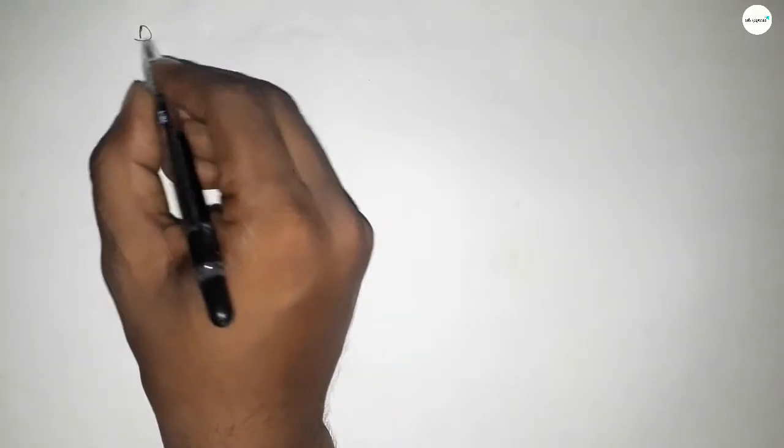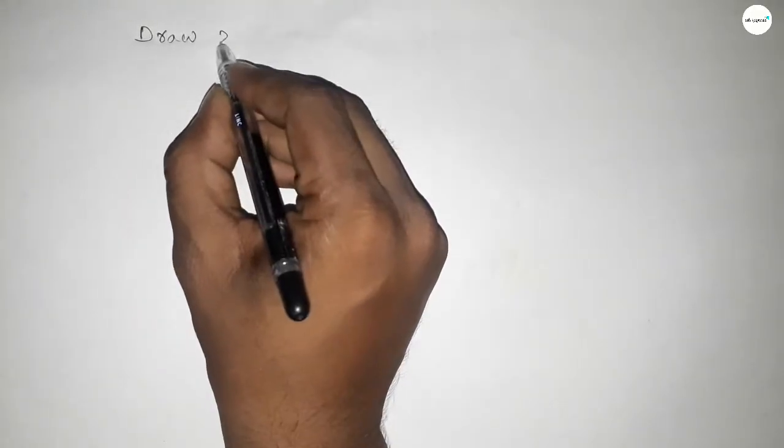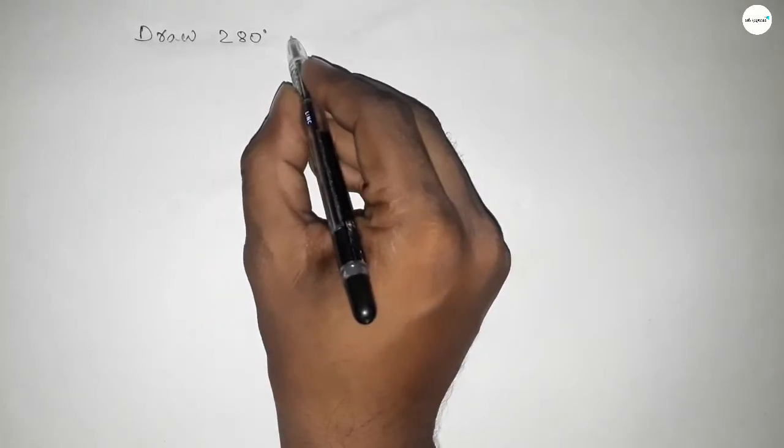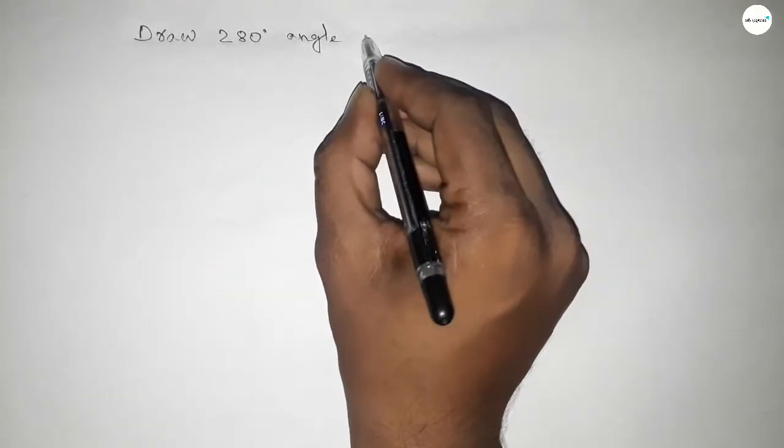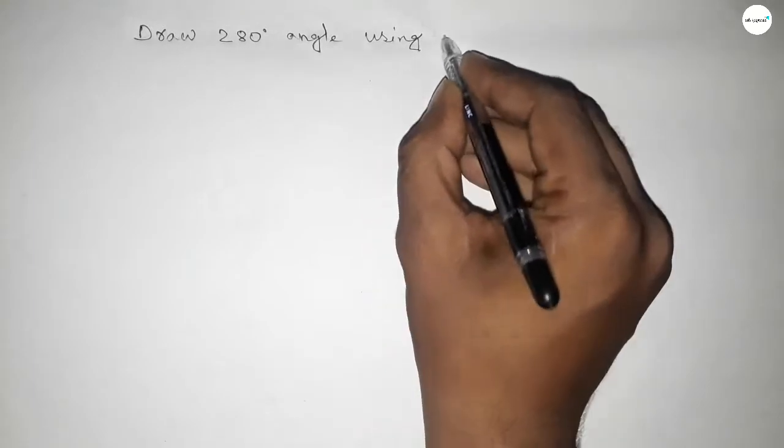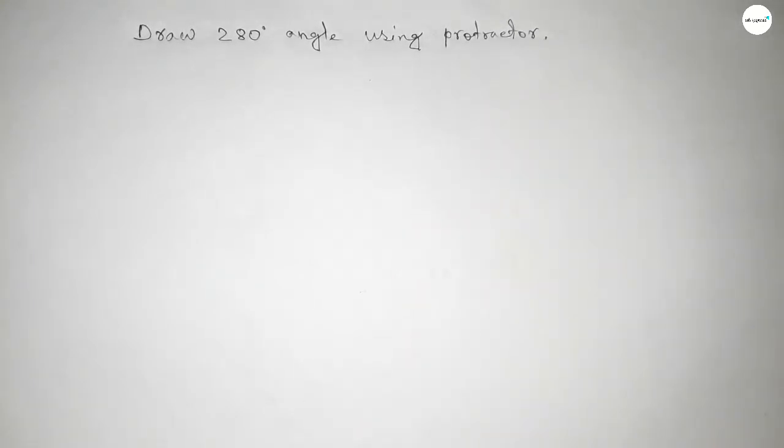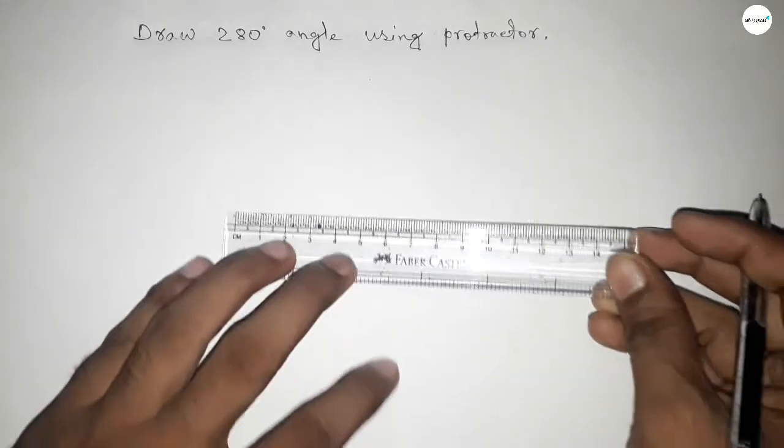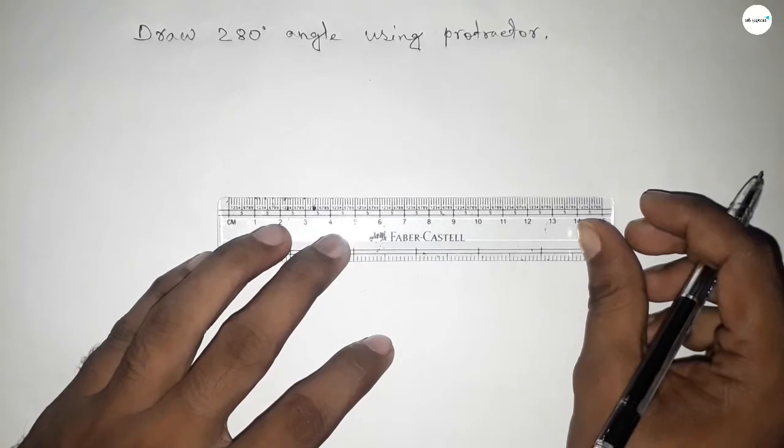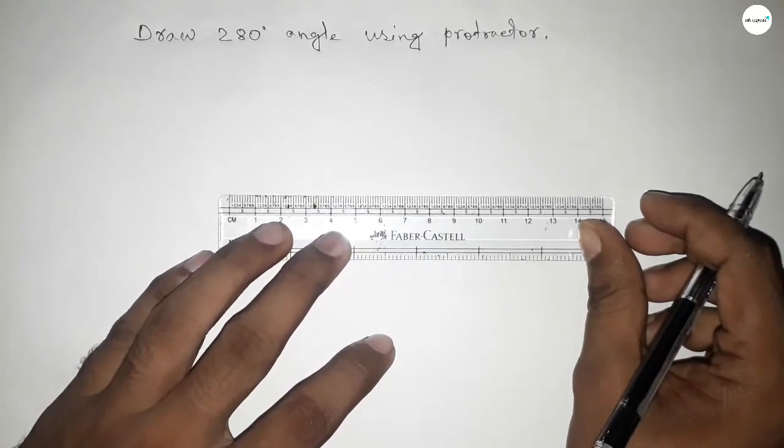Hi everyone, welcome to SSR Classes. Today in this video we have to draw a 280 degree angle using a protractor. So let's start. First of all, we have to draw a straight line of any length.